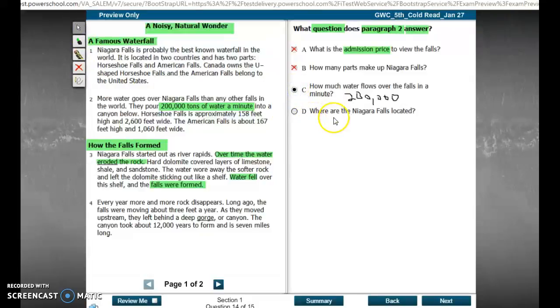but I'm always going to look at D again just to make sure I'm not getting tricked. Where are the Niagara Falls located? This is how they trick you because they answered that question in paragraph one, but you can't look at paragraph one because it doesn't say what question does paragraph one answer. It says what question does paragraph two answer. So they were trying to trick you. You can only look at paragraph two. Correct answer was C.